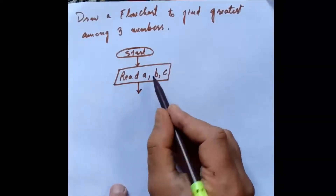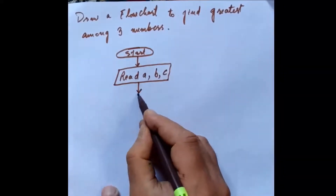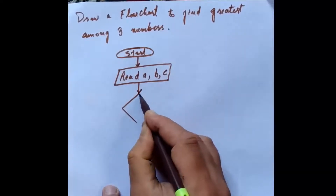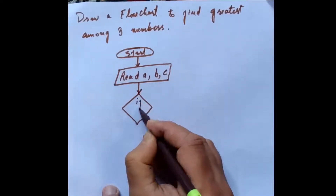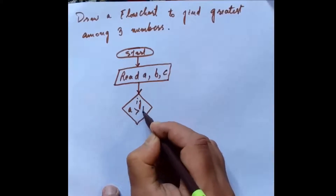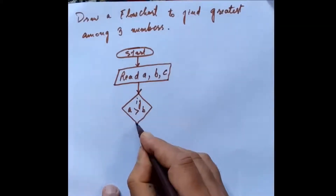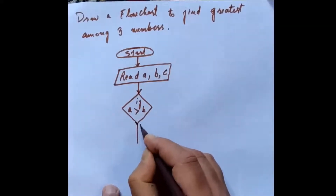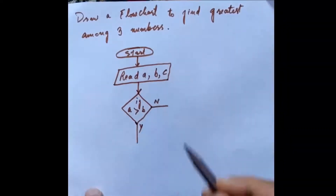Then I will compare A with B first. So I will make a decision box here. I will write: if A is greater than B. If A is greater than B, the yes condition goes from here and the no condition goes from here.